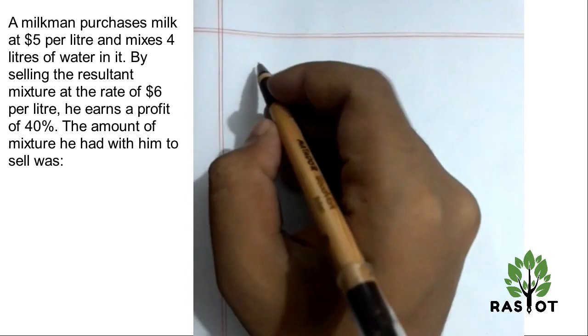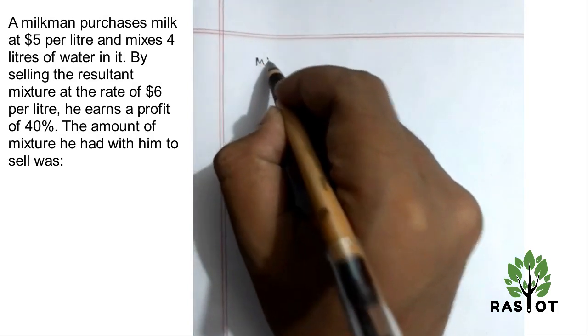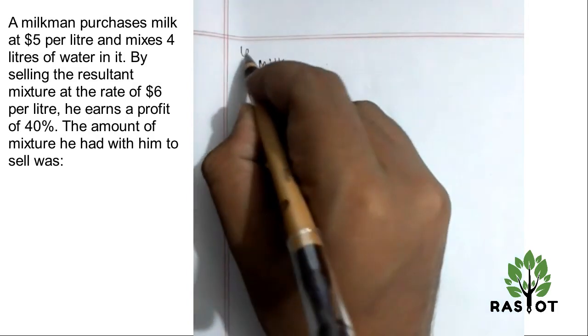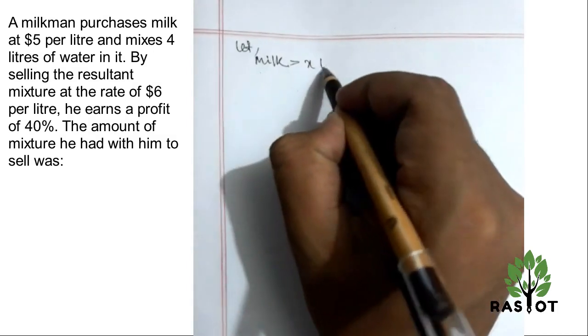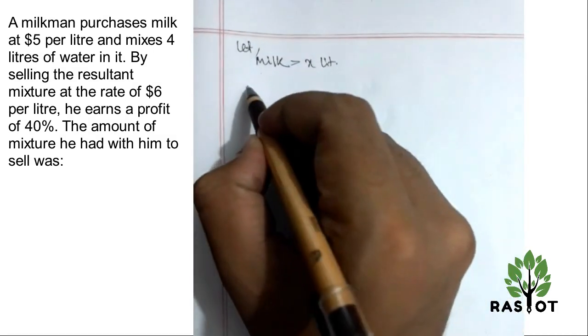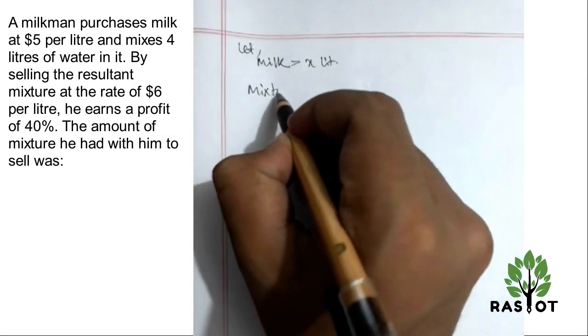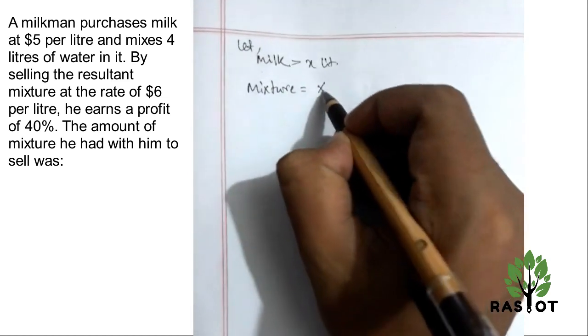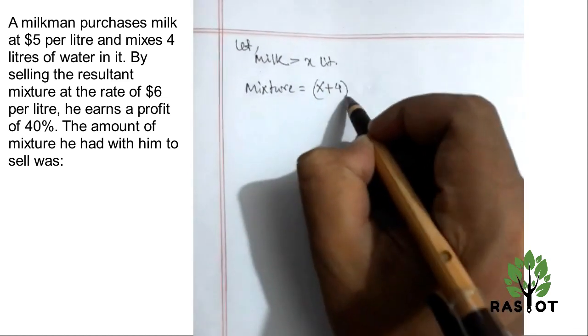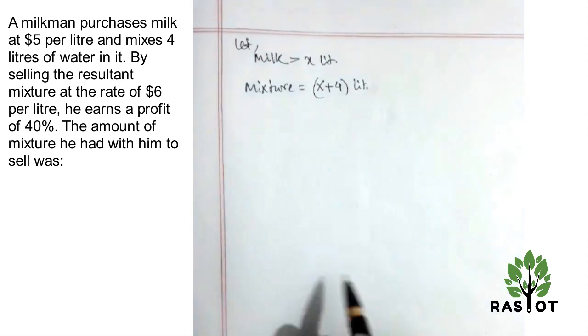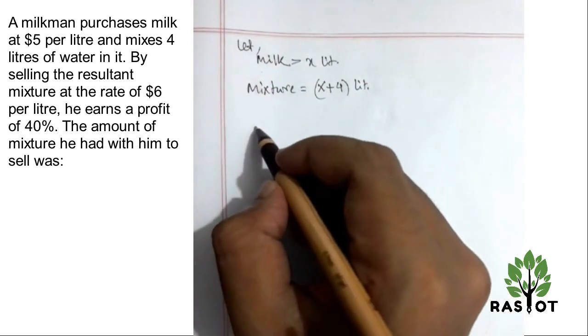Okay, so initially the milk in silo - let's say milk initially is x liters. Then the mixture will be x plus 4 liters after mixing with water, right? Okay, fine.